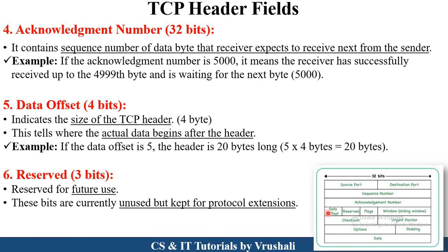The next field is the data offset field. The TCP header size is 4 bytes. Data offset tells where the actual data begins — after the header. For example, if the data offset value is 5 and the header is 20 bytes, then 5 × 4 = 20 bytes of header. So after those 20 bytes, your actual information begins. This is your offset number.